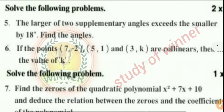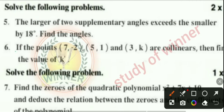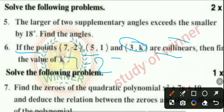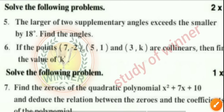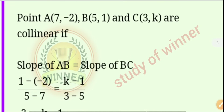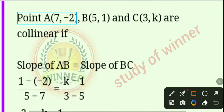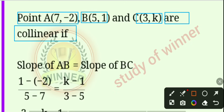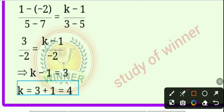Question 6: if the points A(7, -2), B(5, 1), and C(3, k) are collinear, find the value of k. Point A is (7, -2), point B is (5, 1), and point C is (3, k) are collinear. The answer is k = 4.